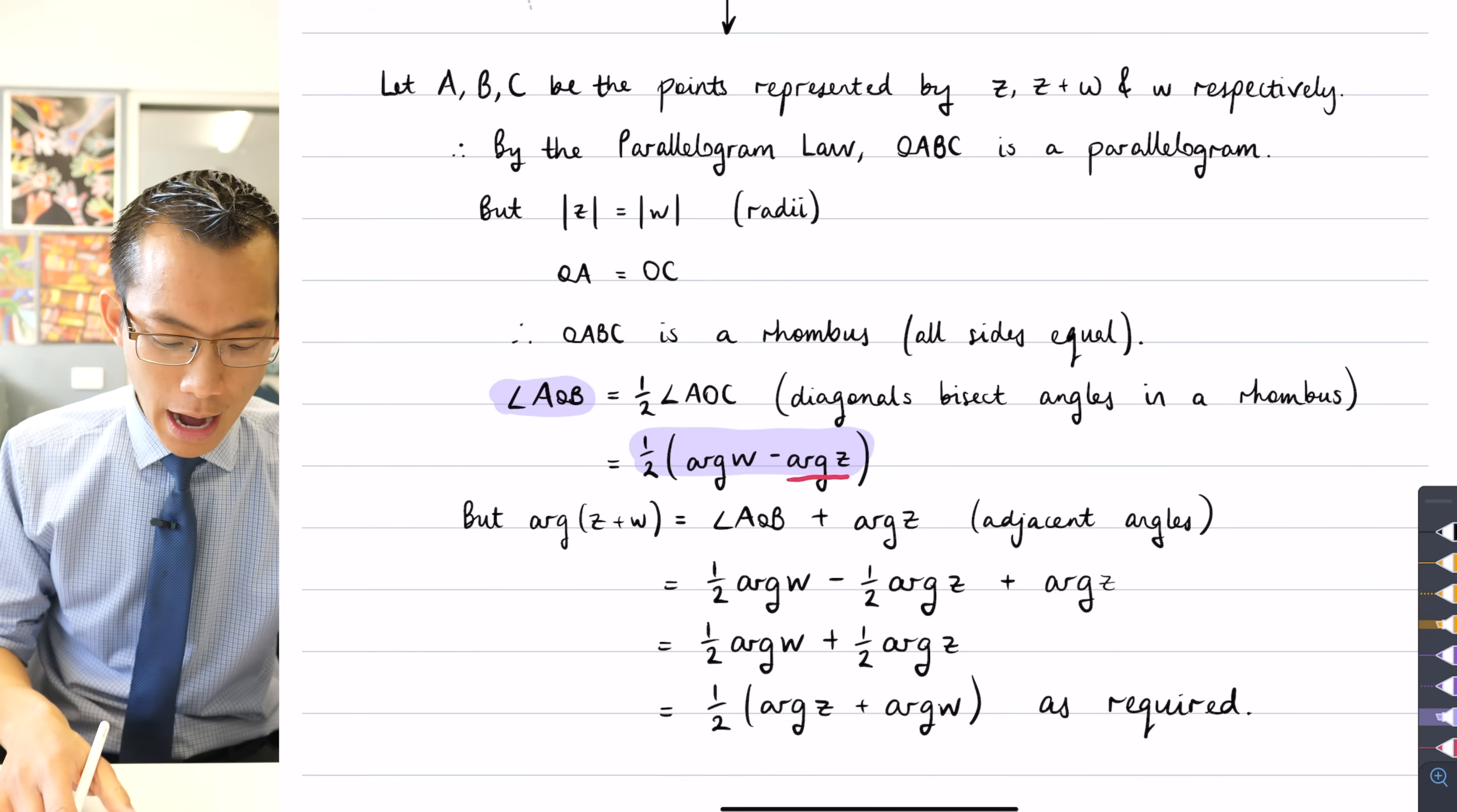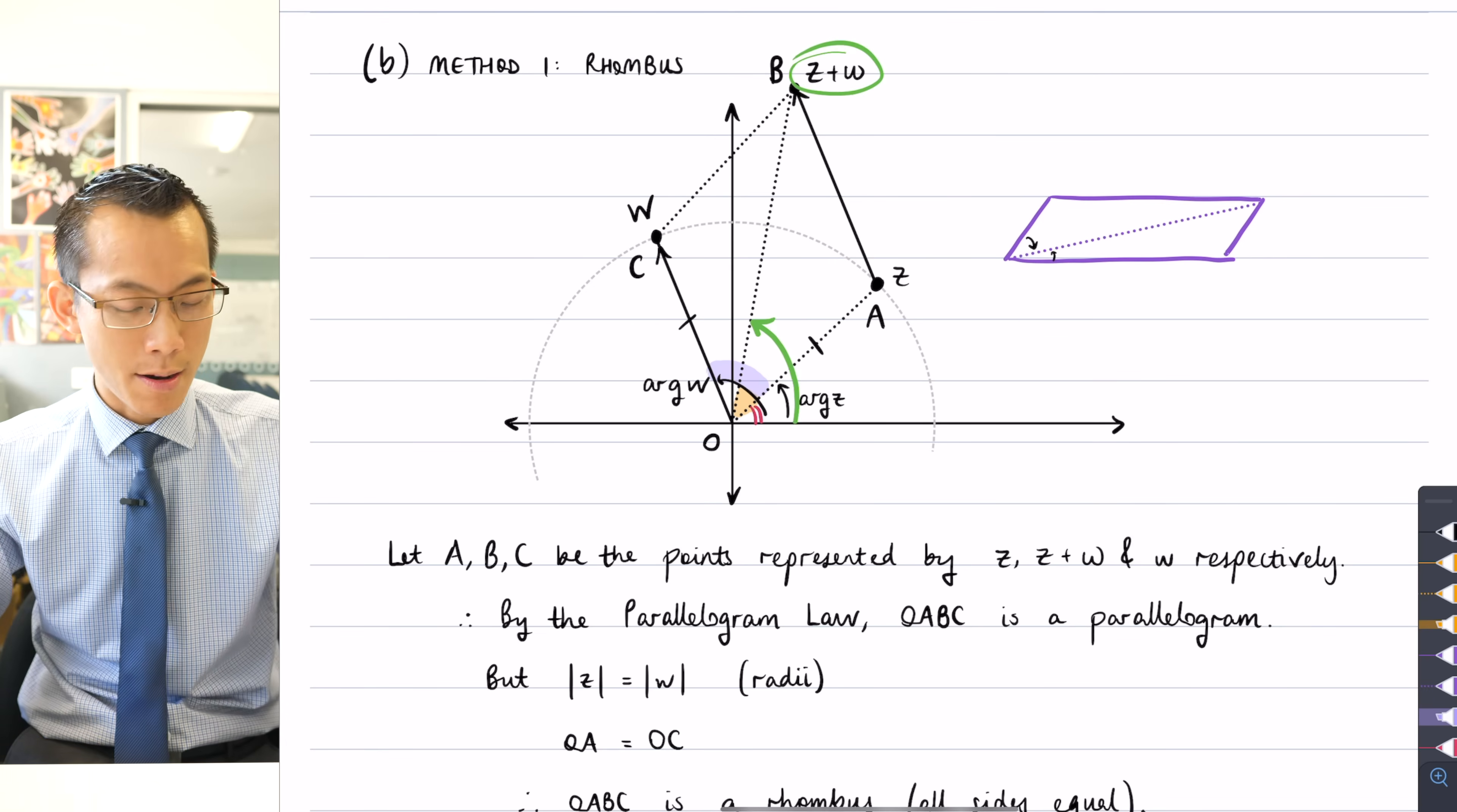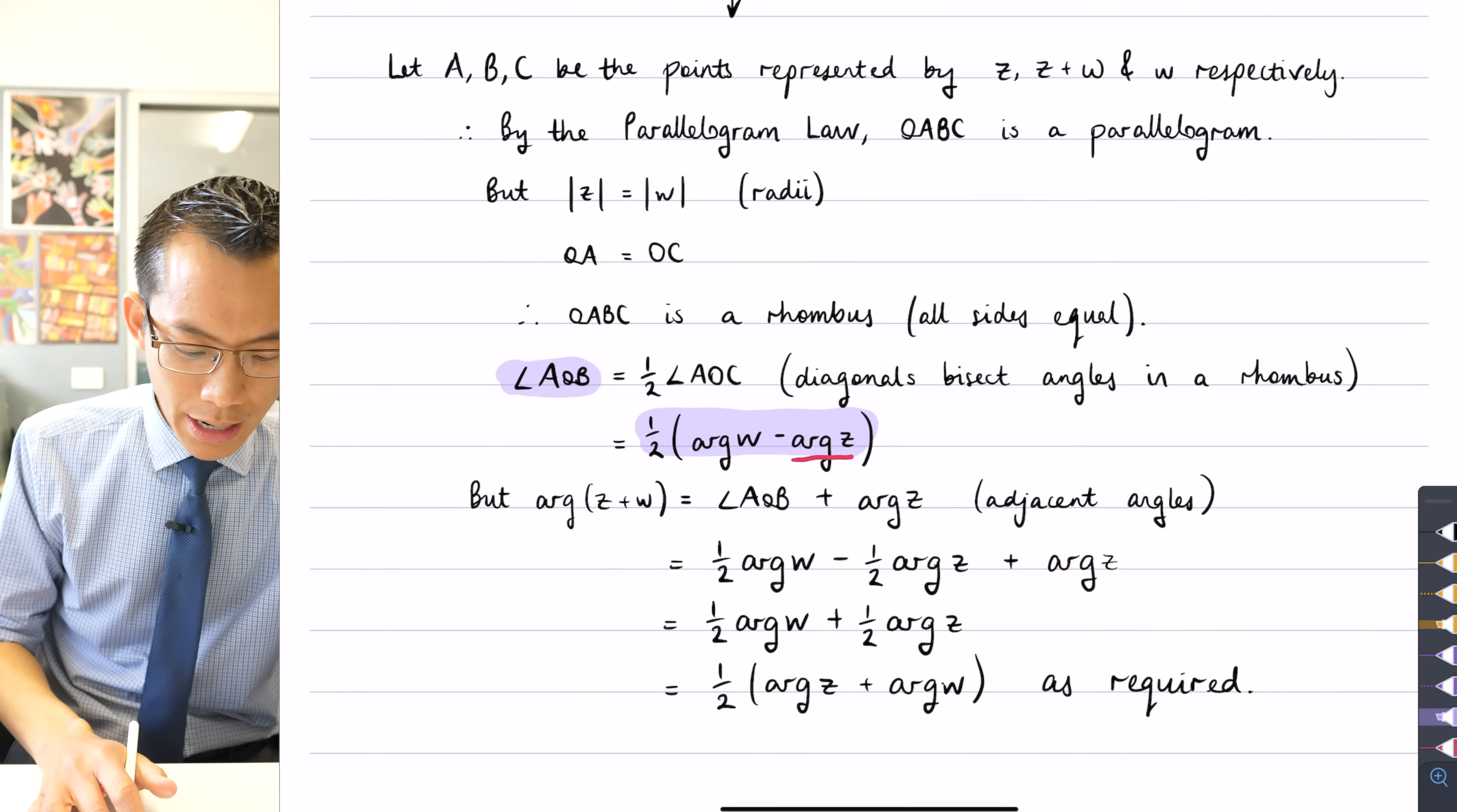So coming back to my diagram here, I haven't related arg of z plus w yet to these other angles, so I can say, where's arg of z plus w? It's this angle in here from, let's choose another color, from the positive real axis all the way up to pointing at z plus w, which you can see up there. So how do I form that angle? Well, you can see it's going to be this red angle plus that orange angle that I just mentioned, which I already determined is half of arg w take away arg z. So red angle arg z plus orange angle, which I just determined, I'm going to have.